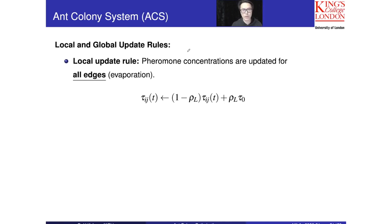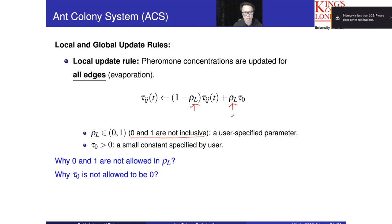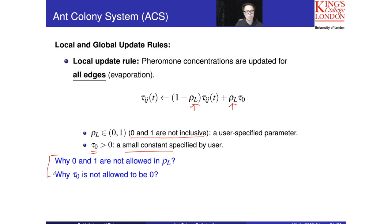Now we move from the transition probability to the local update rule. The local update rule uses this expression: tau_ij is updated using rho_L, a constant in the range of 0 to 1 (not inclusive), and tau_0, which is a small constant. Think about why 0 and 1 are not allowed, and why we choose a small value rather than 0 for tau_0. This local update rule is equivalent to negative feedback — pheromone evaporation.